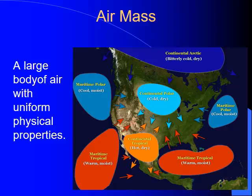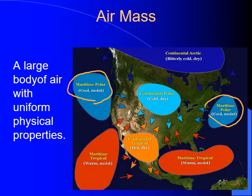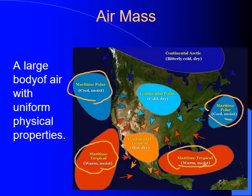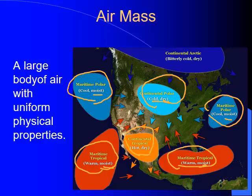If you look at this picture, the maritime polar on the left and the right are the darker blue ones here and here. The maritime tropical here and here in dark red — all say that the air is moist, meaning it has a lot of moisture in it. It's humid. The air masses that form over land are continental and they're dry in terms of moisture content, because over land the air is not getting the moisture that it gets when it's over water.